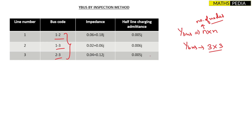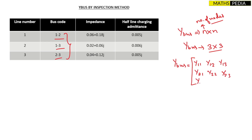Since the total number of nodes is 3, Y-bus will be 3×3. Therefore you can directly write that the elements will be y11, y12, y13, y21, y22, y23, y31, y32, and y33.